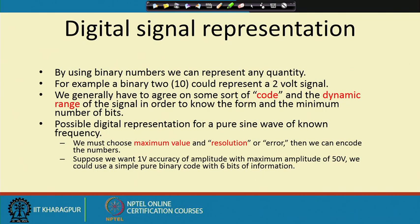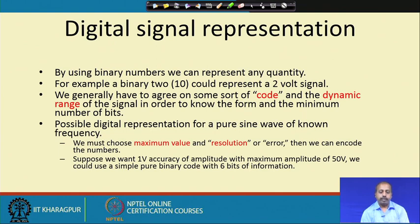If binary 1 corresponds to a 1 volt signal, then the binary value 2 corresponds to a 2 volt signal. We generally have to agree on some sort of code. You can say that minus 12 volt is 0 and plus 12 volt is 1, or somebody may say plus 12 volt is 0 and minus 12 volt is 1 — both are possible. If you look into different systems, all these different types of representations are possible.